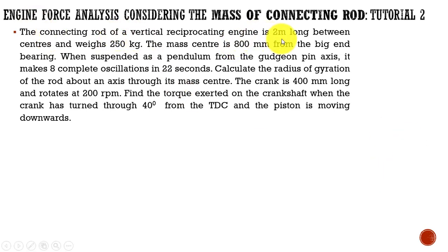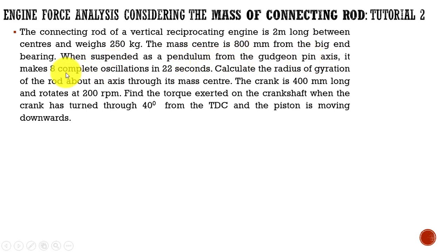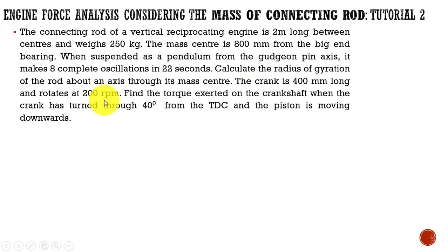The connecting rod of a vertical reciprocating engine is 2 meters long between centers and it weighs 250 kg. The mass center is 800 mm from the big end bearing. When suspended as a pendulum from the gudgeon pin axis, it makes 8 complete oscillations in 22 seconds. Calculate the radius of gyration of the rod about an axis through its mass center. The crank is 400 mm long and rotates at 200 rpm. Find the torque exerted on the crankshaft when the crank has turned through 40 degrees from top dead center, and the piston is moving in the downward direction.